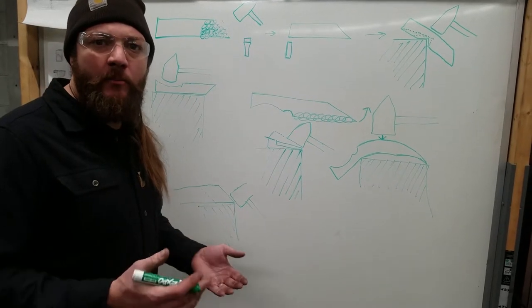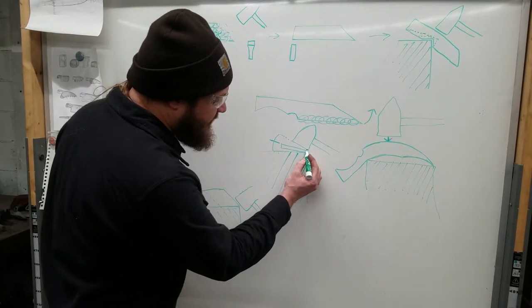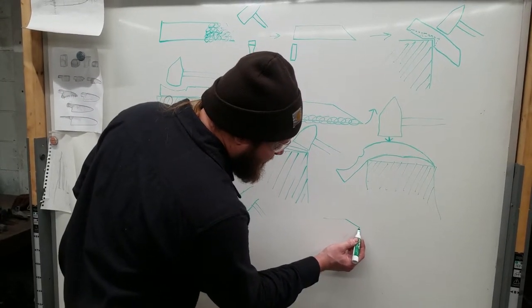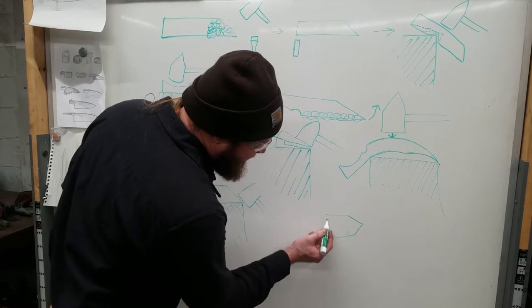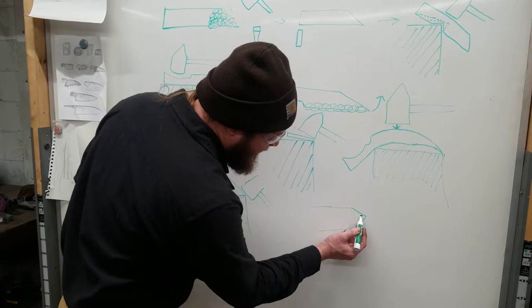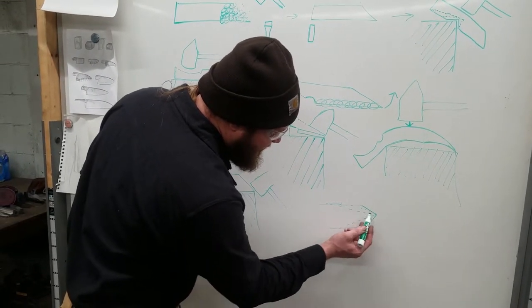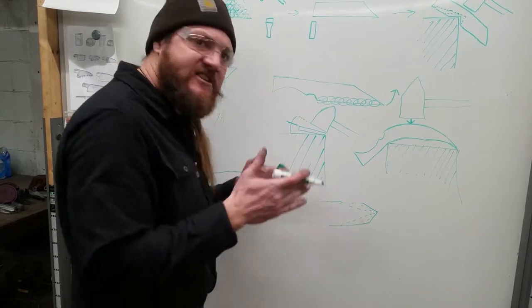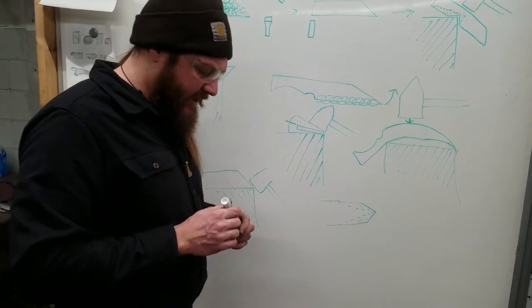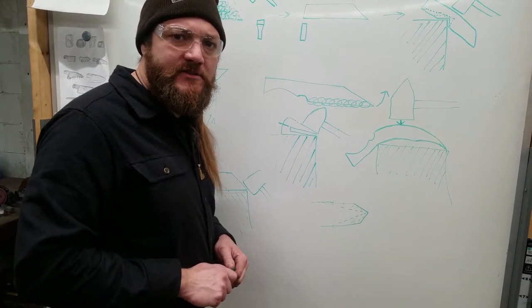An important note on how I'm putting this bevel in is I'm starting out at the edge of the material and basically starting with something like this and then slowly bringing that back. Start down at the edge and work your way back towards the spine. That is the most effective way of forging in your bevels.